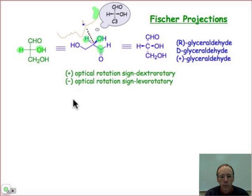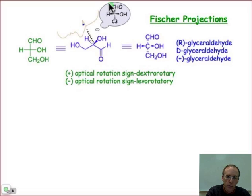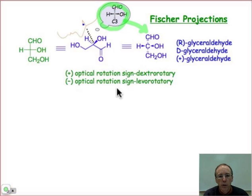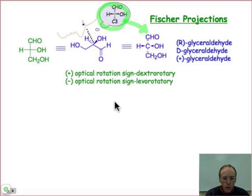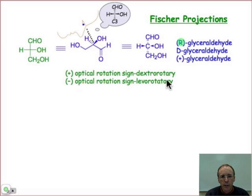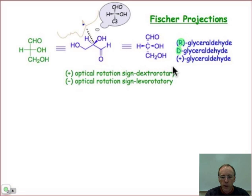The Fischer projection of a single carbon atom is relatively straightforward, and we'll see that it gets more complicated as we move to larger structures. This is what you should be thinking about — that's the three-dimensional view of the glyceraldehyde molecule. If you were to determine the stereocenter there using the R/S configuration, you'd find that this happens to be the R configuration. We call it capital D glyceraldehyde, and you'll see where that comes from in just a moment.